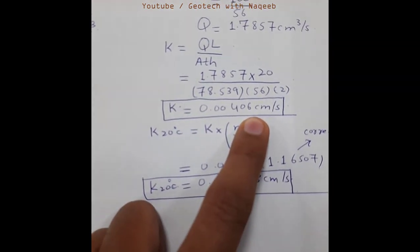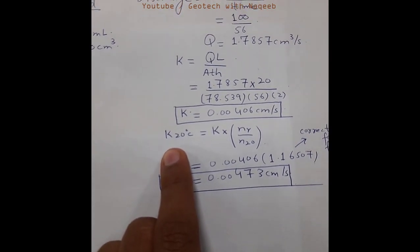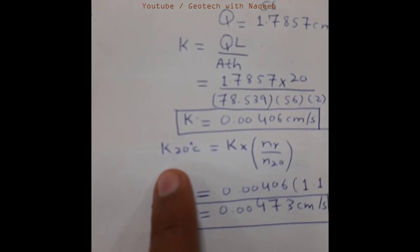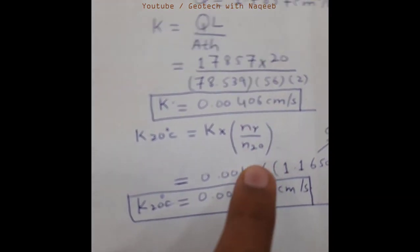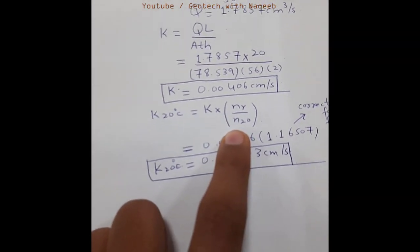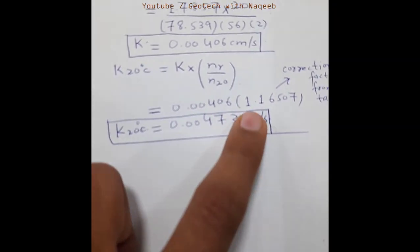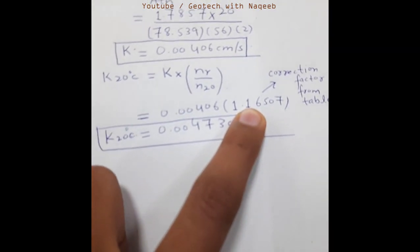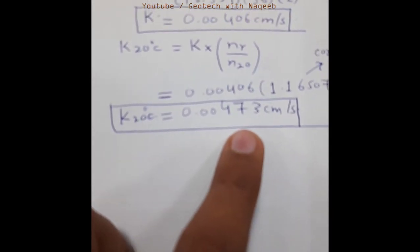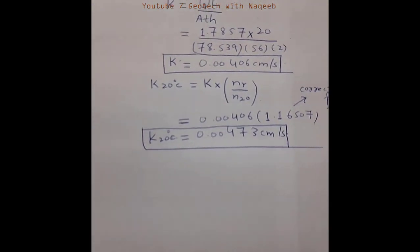We need to find the hydraulic conductivity at 20°C, so we apply a temperature correction. We multiply the k value by the correction factor (η_T / η_20), which can be extracted from the ASTM standard table. The correction factor is 1.165, so k₂₀ = 0.00406 × 1.165 = 0.00473 cm/s. This is the final value of hydraulic conductivity from the constant head test.